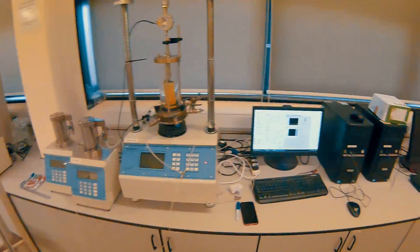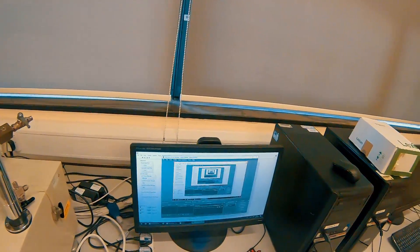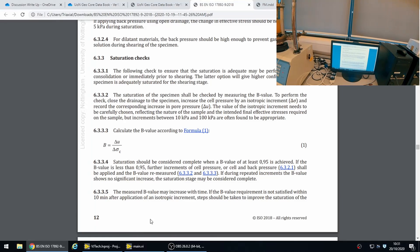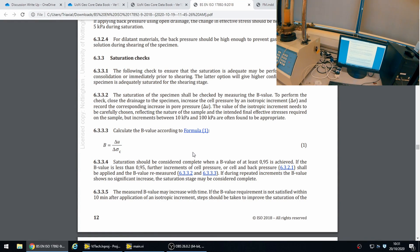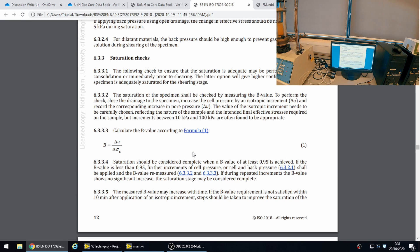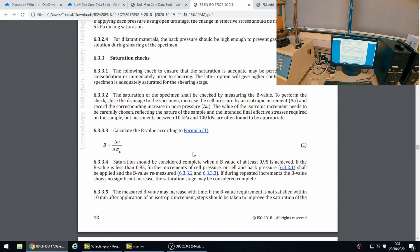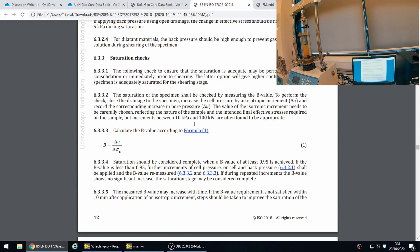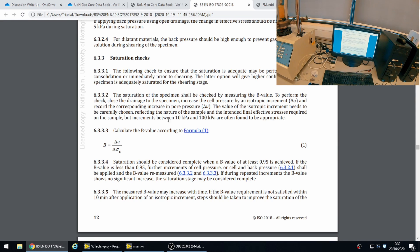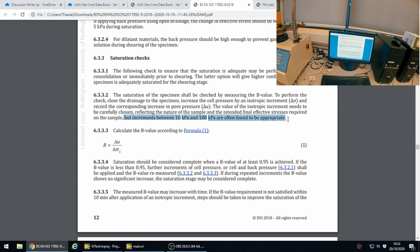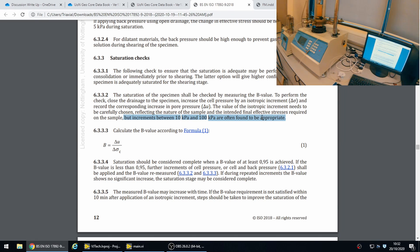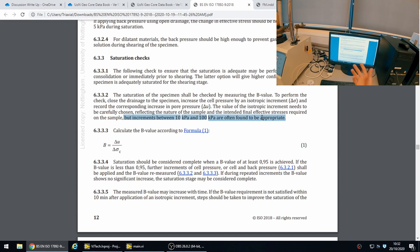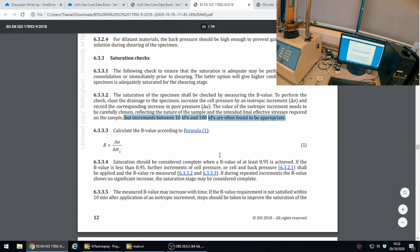That is going to affect our B value—our B value will be lower as a consequence. If we take a look at the standards, we see a few things we need to take account of when doing our saturation check or B check. First, the increment of cell pressure should be between 10 kilopascals and 100 kilopascals. For the purposes of this B check, we're going to increase the cell pressure by 50 kilopascals.